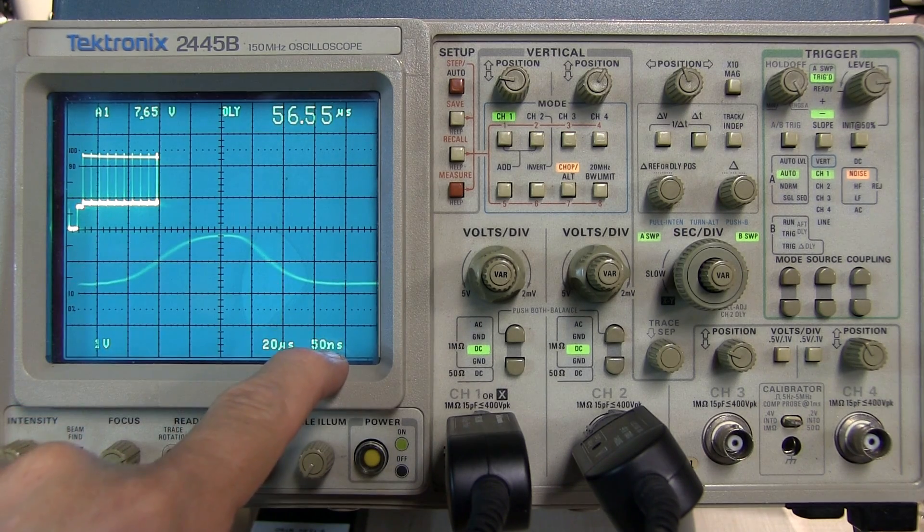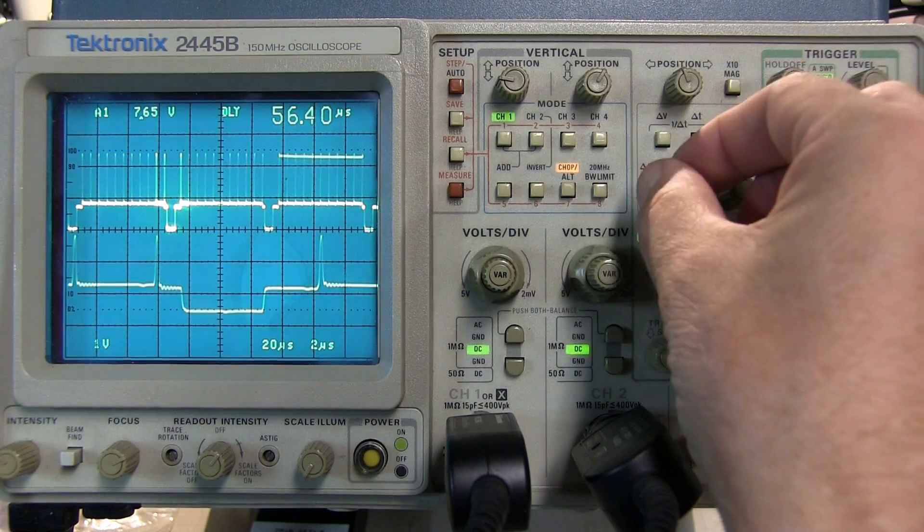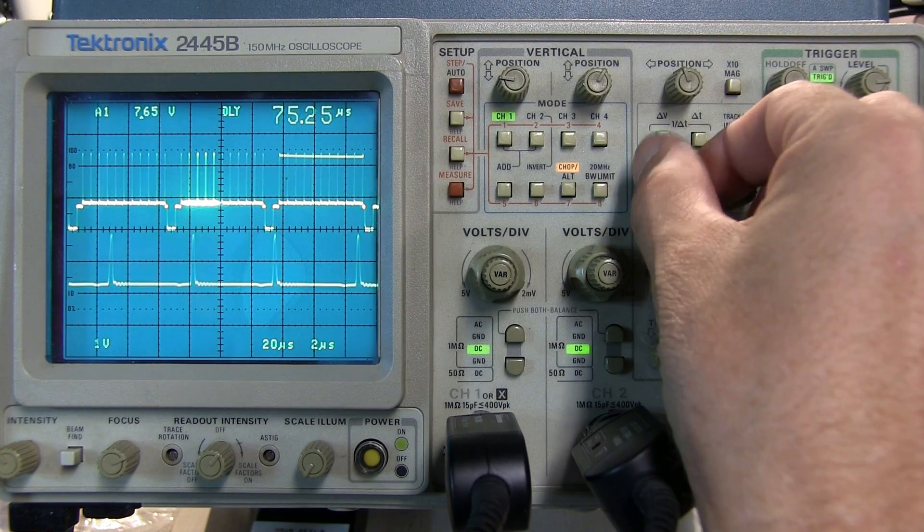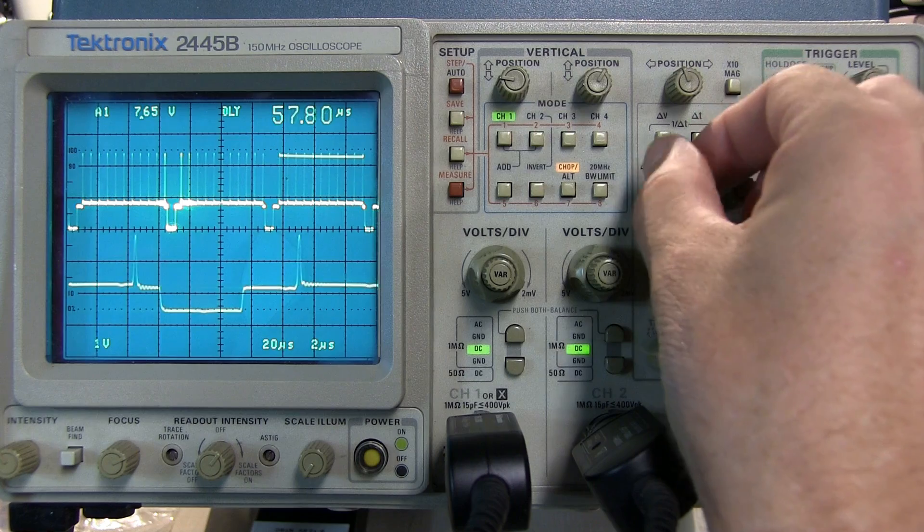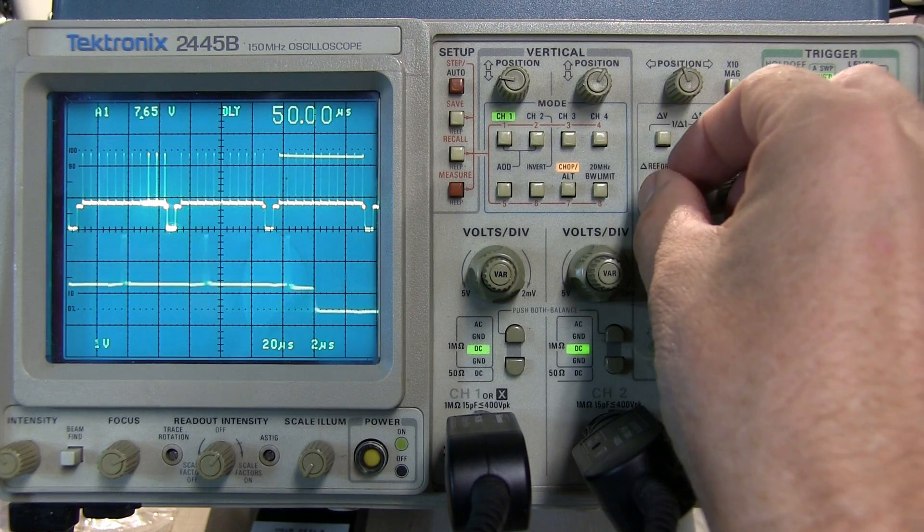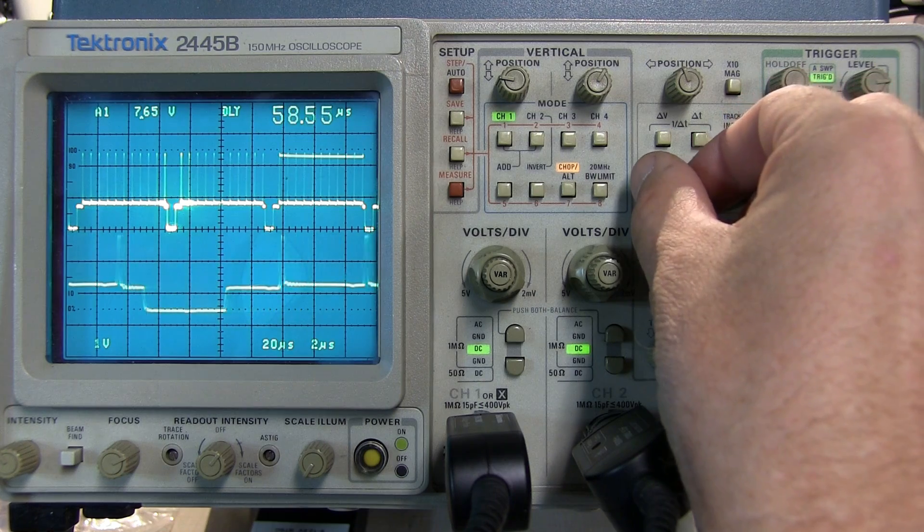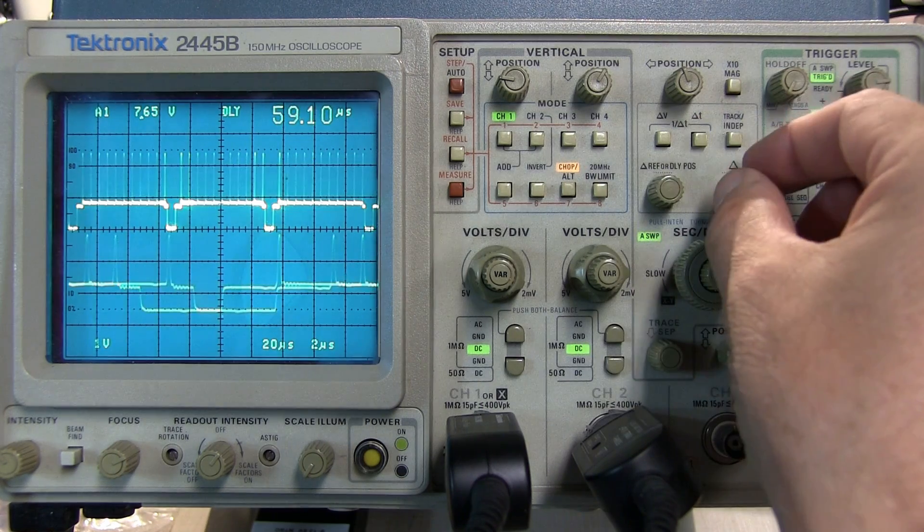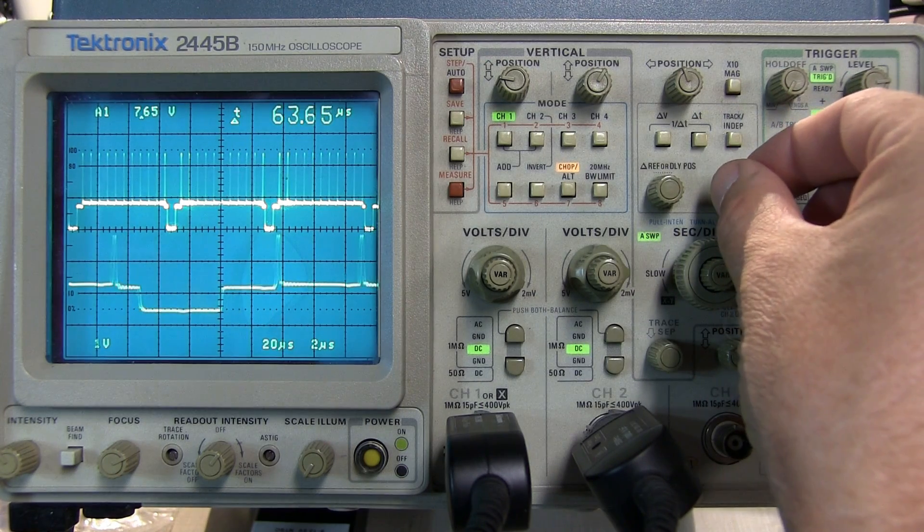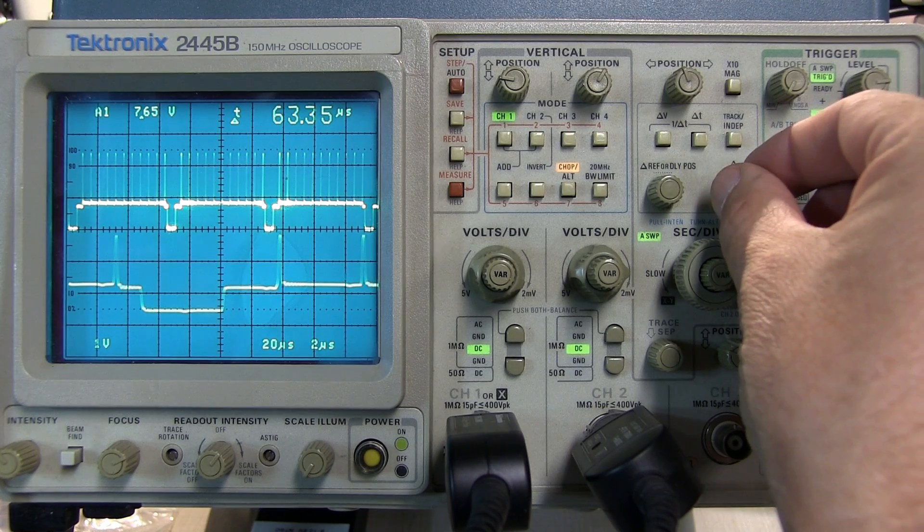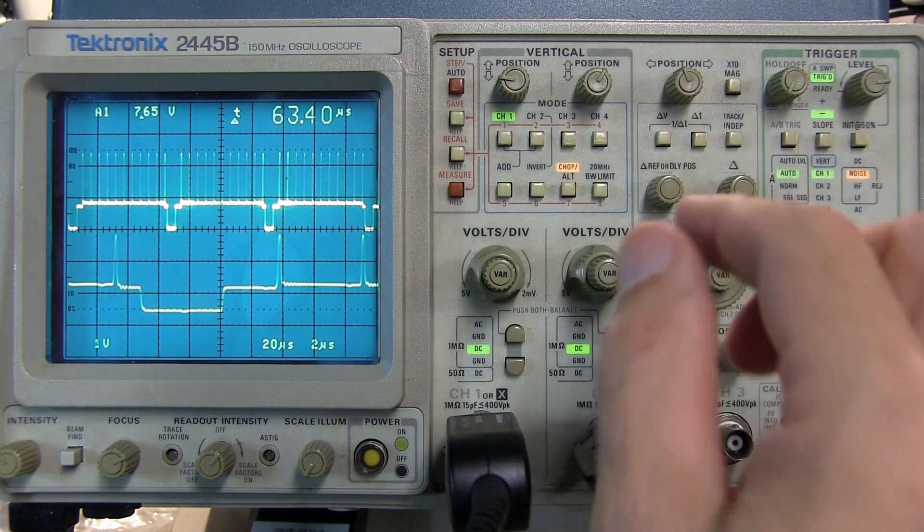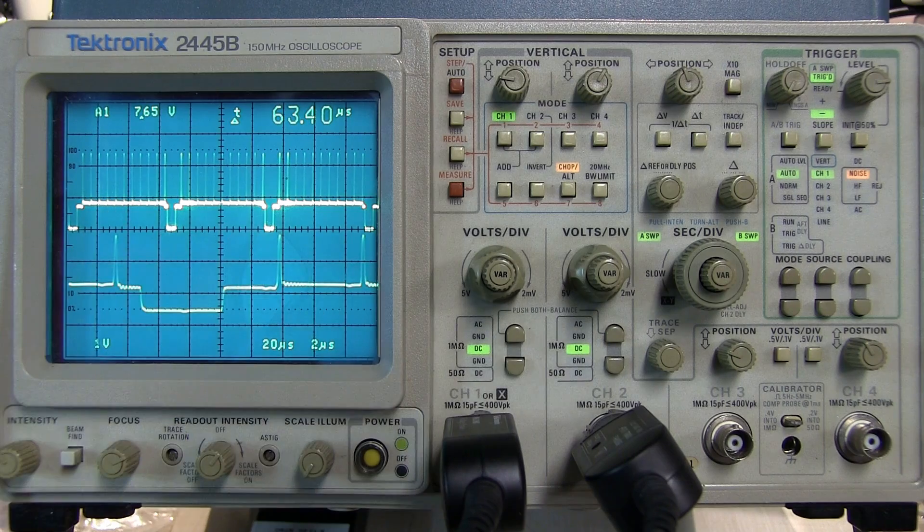Well I hope you learned a little something about how the delayed time base works in the 2445, 2455, and 65, 67 series scopes and appreciate some of the thought and ingenuity that went into the design of these scopes to allow engineers to take a detailed look at multiple portions of complex signals in the days before storage technology.